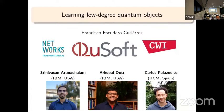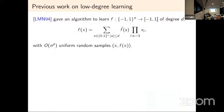The next talk will be by Francisco Escudero Gutierrez on learning low-degree quantum objects. This is work done jointly with Srinivasa Natsalam, Arco Paldud, and Carlos Palafogos. I will start by introducing a classical version of the problem — the problem of low-degree learning.